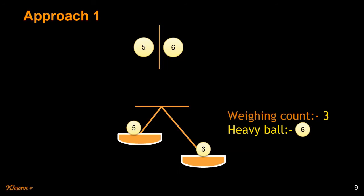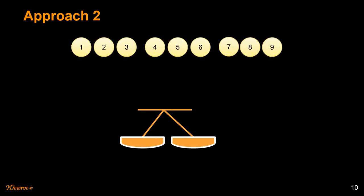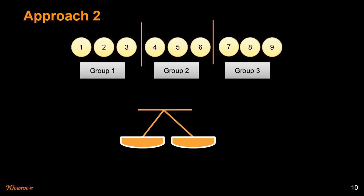Let's look at the second approach that I took while solving the problem. Instead of dividing up the balls into four, four, and then one, I divided up the balls into three, three, and three. So I had three groups of three balls each.